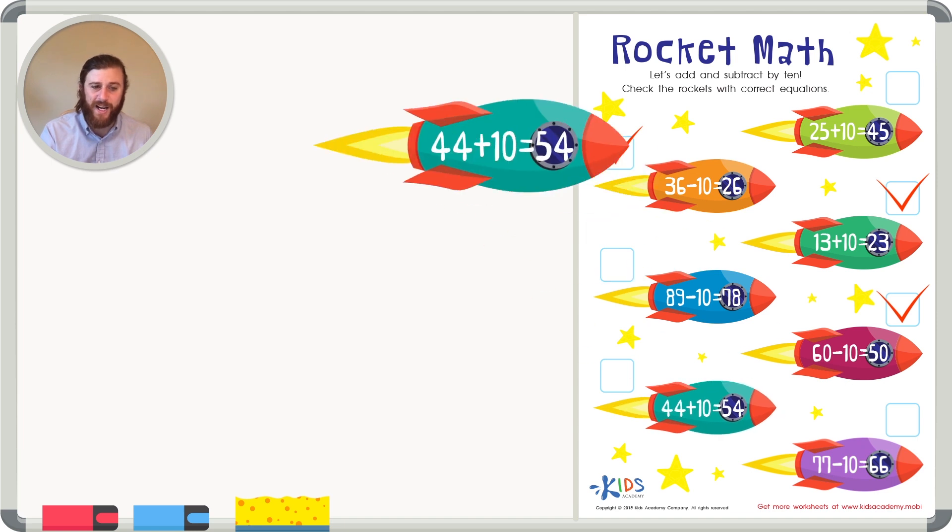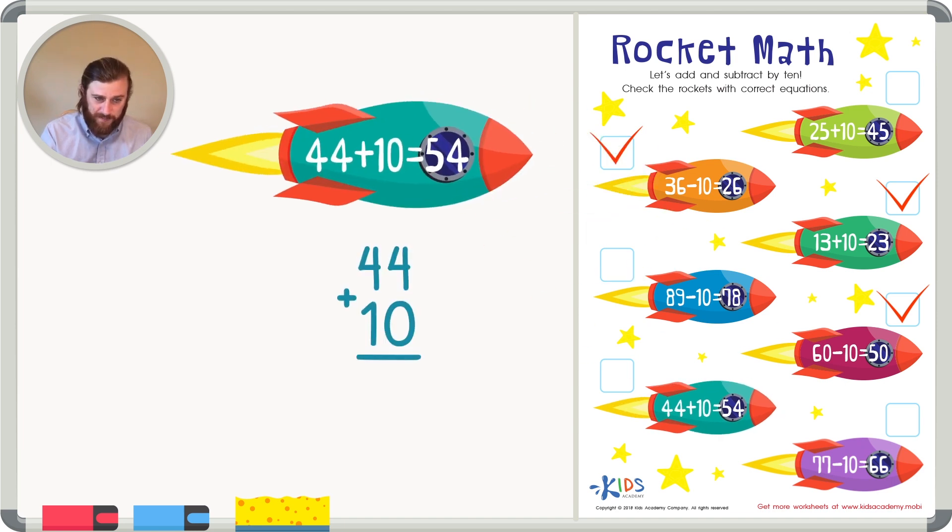The next rocket shows 44 plus 10. The answer on the rocket is 54. Let's see if this is correct. 4 plus 0 is just 4, and 4 plus 1 is 5. This gives us a sum of 54, just like on the rocket, meaning this is a correct number sentence.